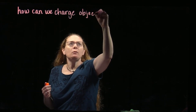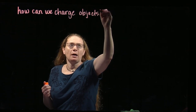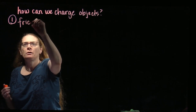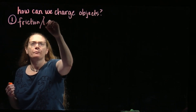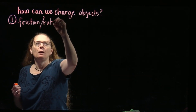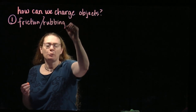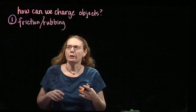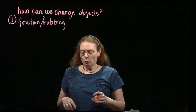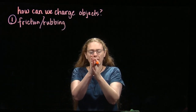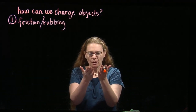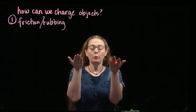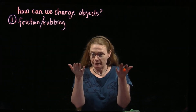We're going to deal with three ways to charge objects. The first way is friction, or rubbing. This is kind of like when you pull scotch tape off the roll really quickly — it actually becomes charged. When we rub two things together, we can take two neutral objects and end up with both objects being charged.